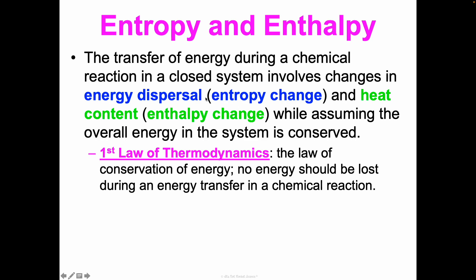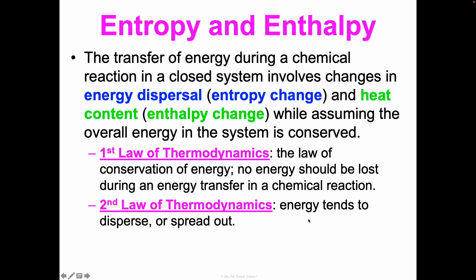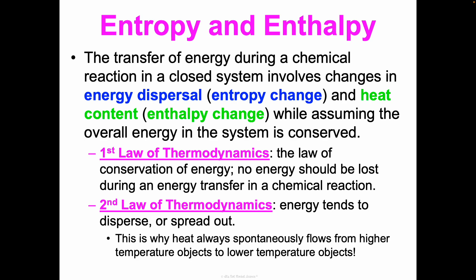Even though we see changes in how energy is dispersed and the heat content, we shouldn't see an overall loss of energy. The second law of thermodynamics says that energy tends to disperse or spread out — it doesn't tend to stay clumped up. This is why heat always spontaneously flows from higher temperature objects to lower temperature objects. In spontaneous reactions, we tend to see an increase in entropy as things spread out, and a decrease in enthalpy as heat moves from higher to lower.